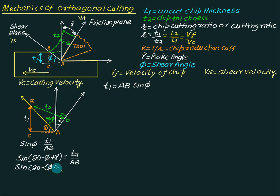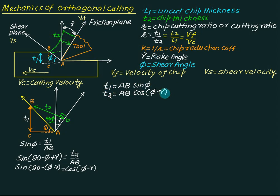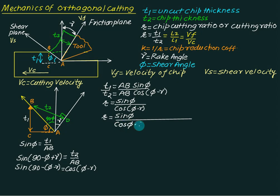Since t2 is opposite and AB is the hypotenuse, we have t2 divided by AB equals sin(90 minus phi minus gamma), which can also be written as cos(phi minus gamma). From the first equation, t1 equals sin(phi) multiplied by AB. From the second, t2 equals AB multiplied by cos(phi minus gamma). Taking the ratio t1 by t2, AB cancels, giving r equals sin(phi) divided by cos(phi minus gamma).